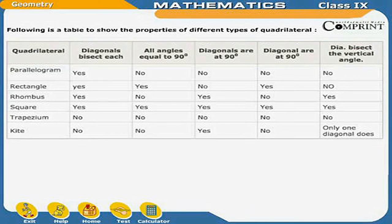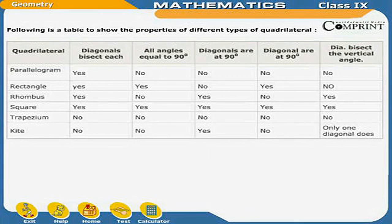In this way, we can read the different properties of different quadrilaterals from the table. For example, in a kite: diagonals do not bisect each other, all angles are not equal to 90 degrees, diagonals are at 90 degrees, and only one diagonal bisects the vertical angle.